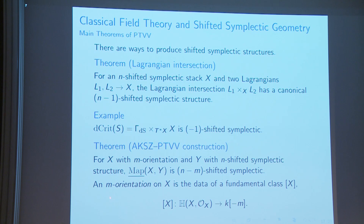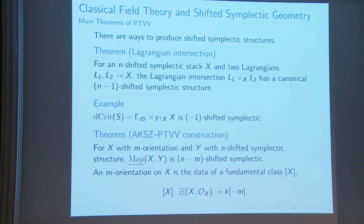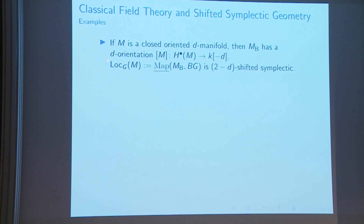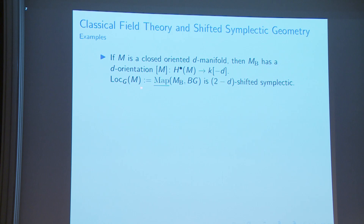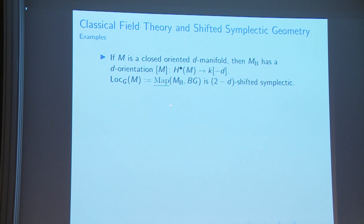Orientation here means something like a fundamental class. If M is a closed oriented D-manifold, the fundamental class gives D-orientation. Using the AKSZ-PTVV theorem with BG being 2-shifted symplectic and M being D-oriented, the mapping stack Map(M, BG) is (2-D)-shifted symplectic. In particular, when M is a 2-manifold, you recover the usual symplectic structure on the moduli of local systems.